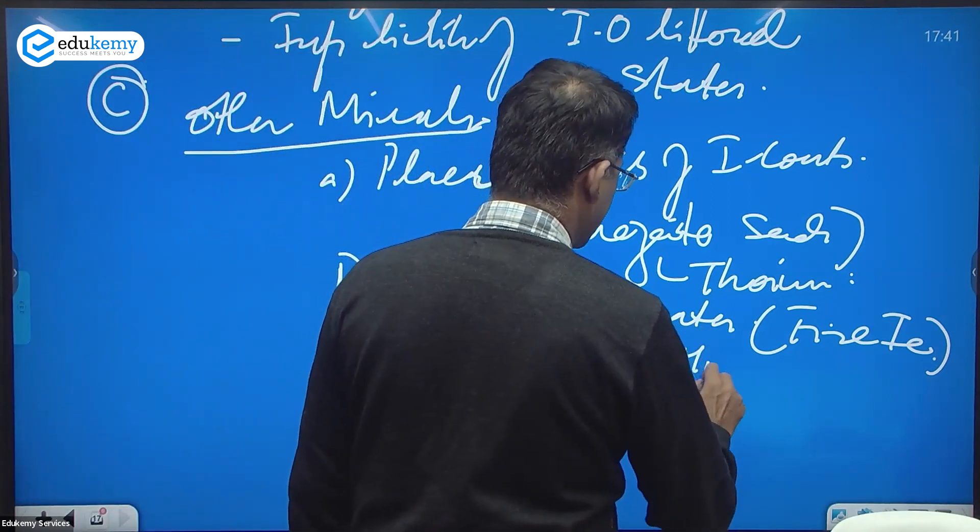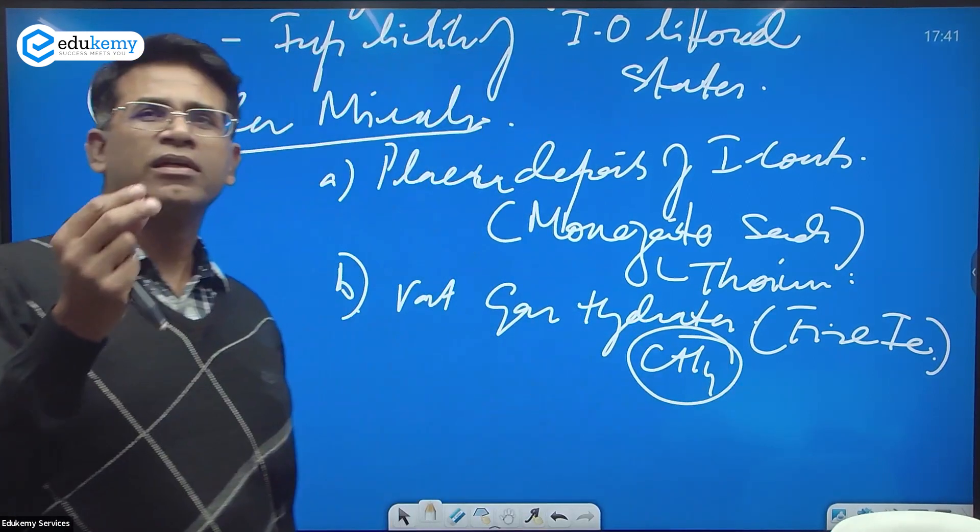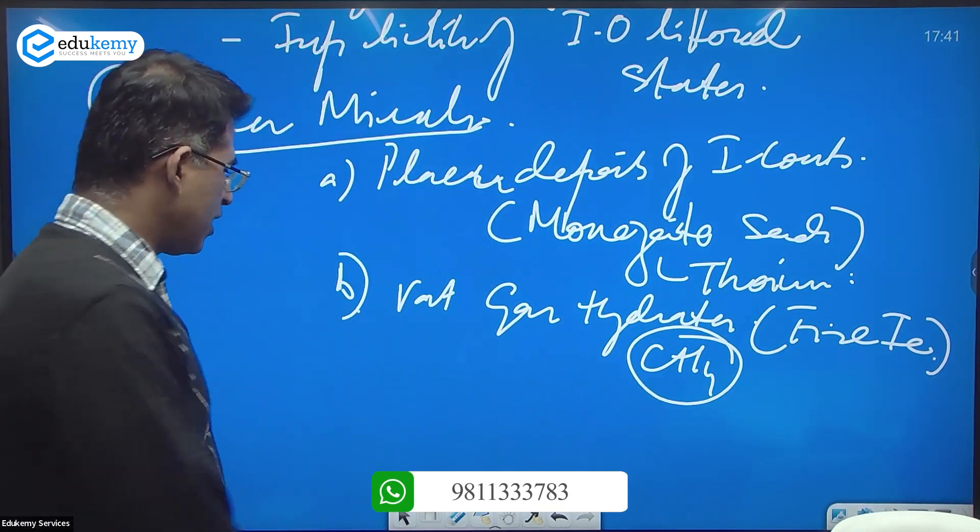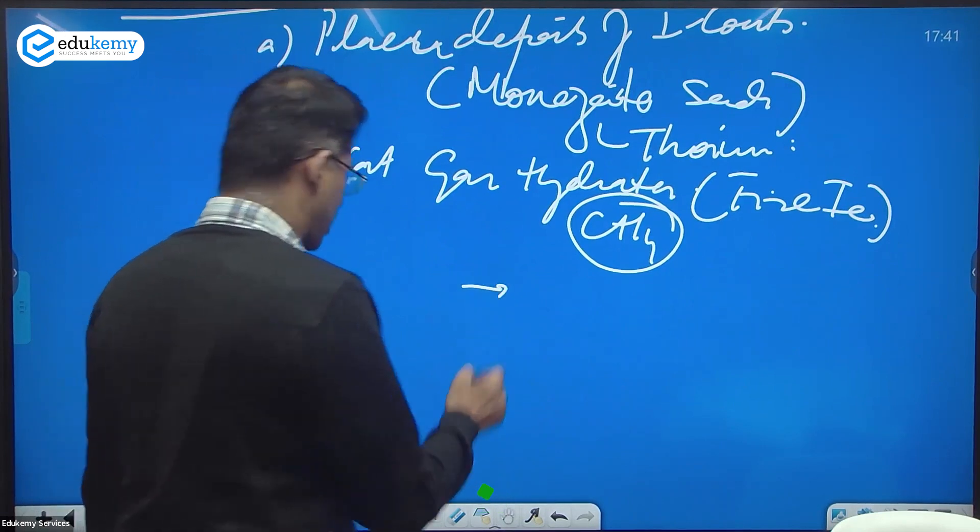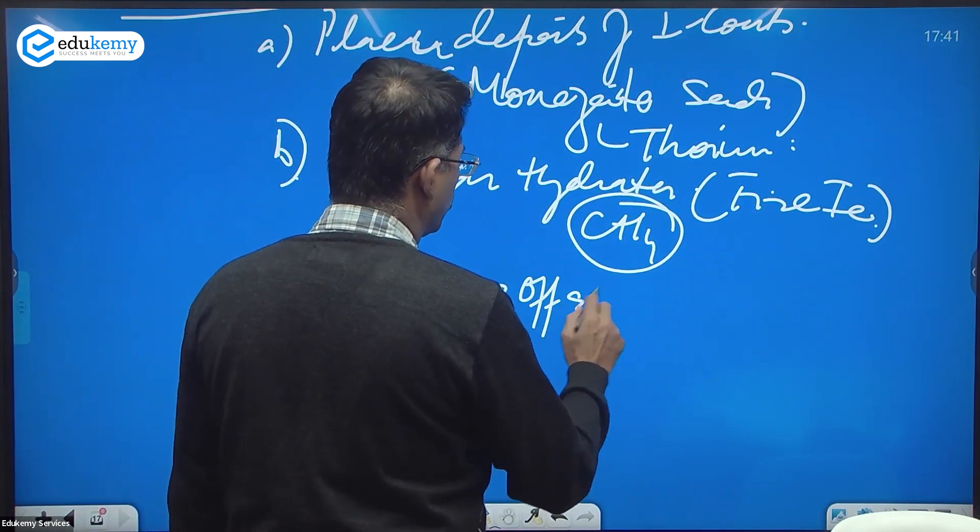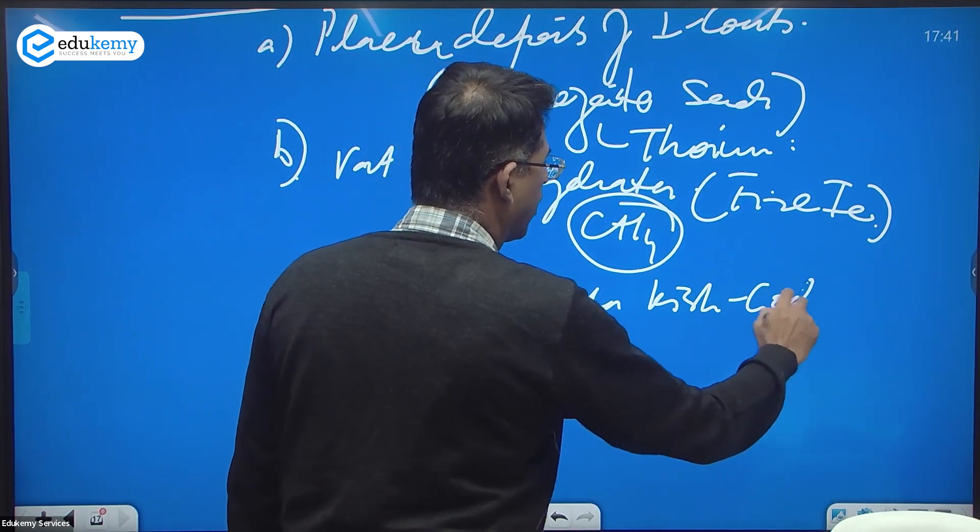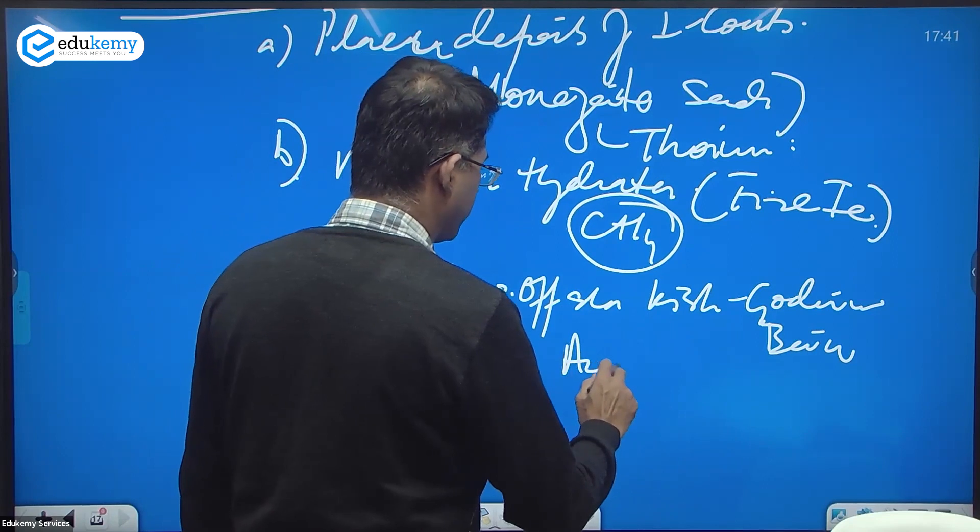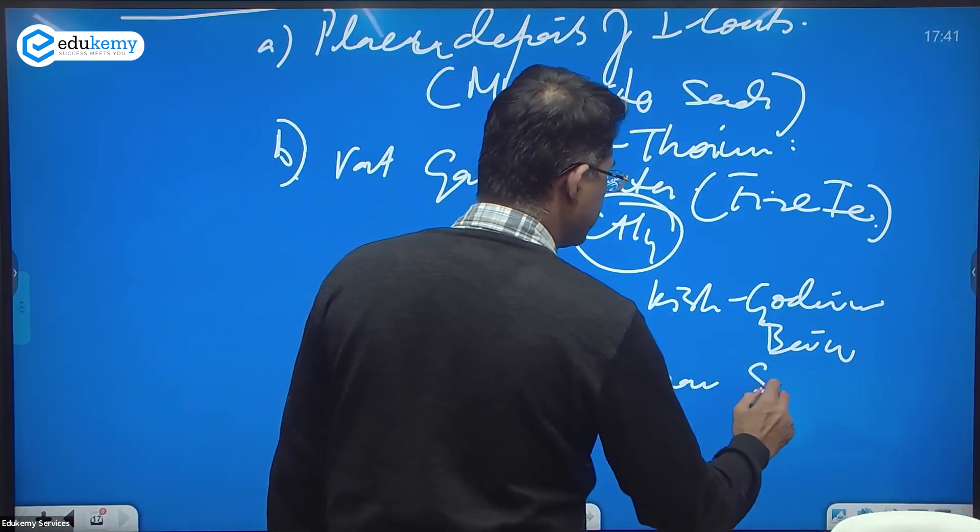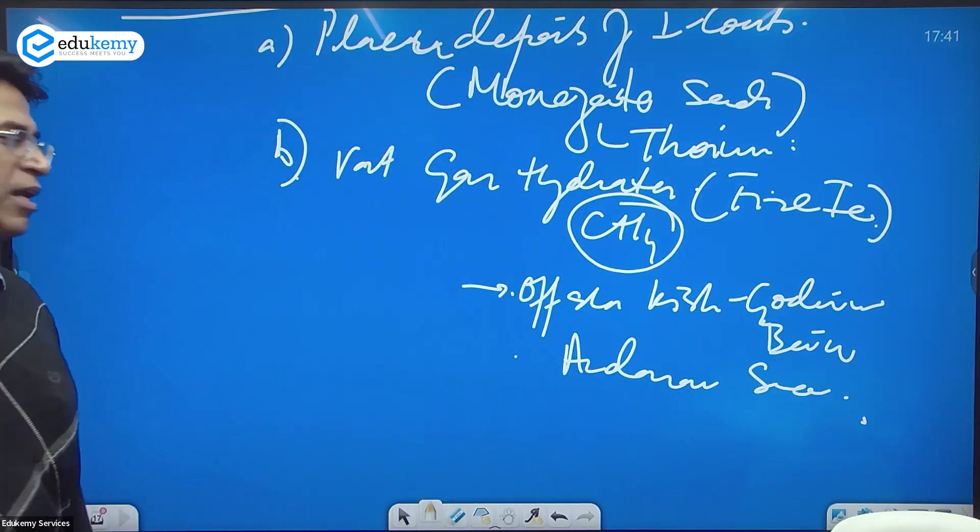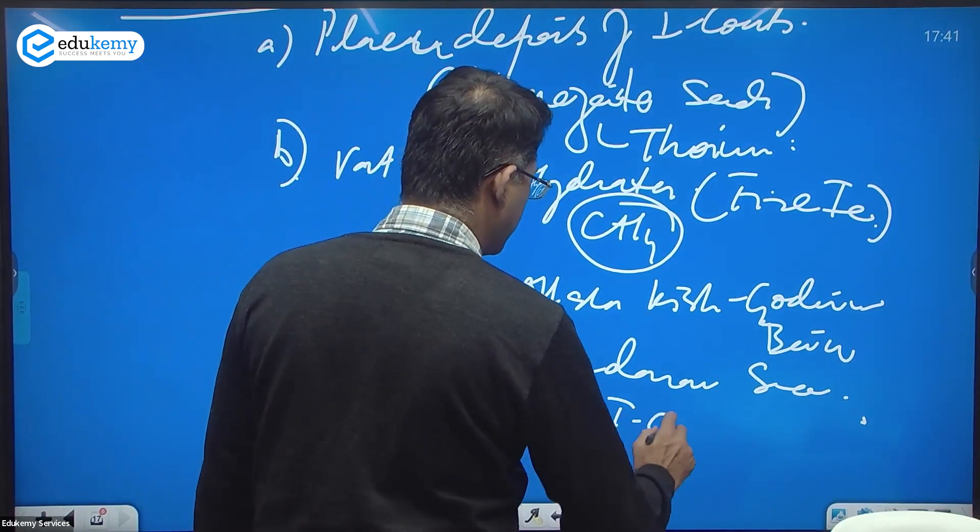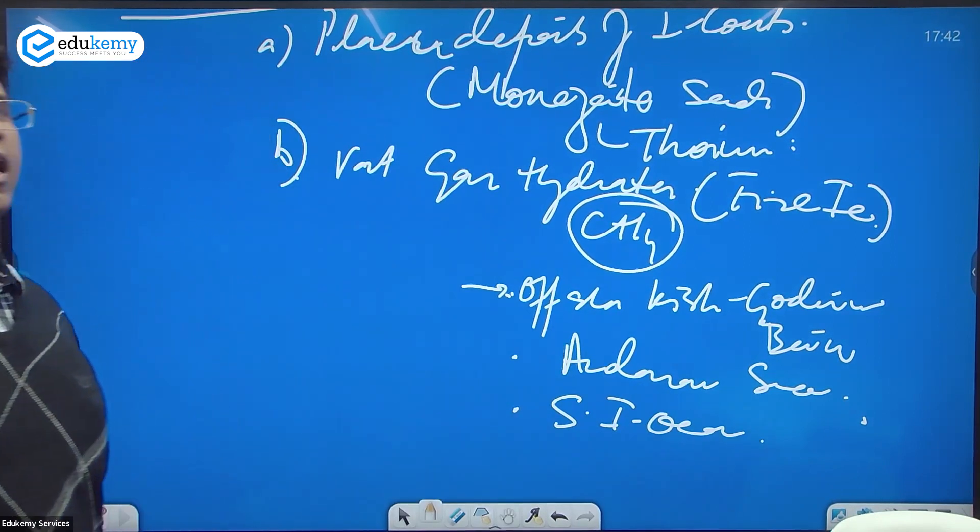These are methane gases that have under pressure become crystallized on the ocean floor. Two very important locations are offshore Krishna-Godavari basin and parts of the Andaman Sea. They also have found substantial amounts in the southern Indian Ocean.